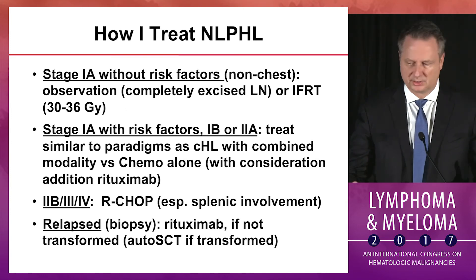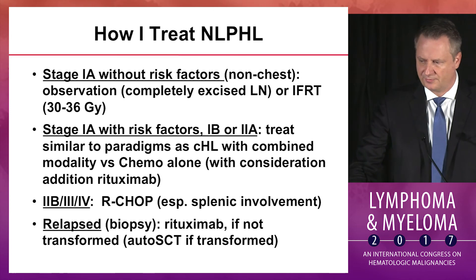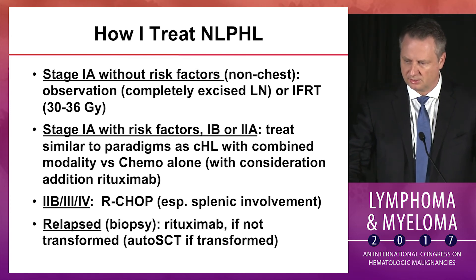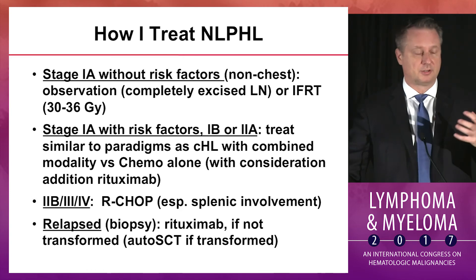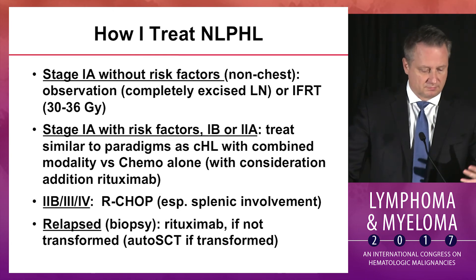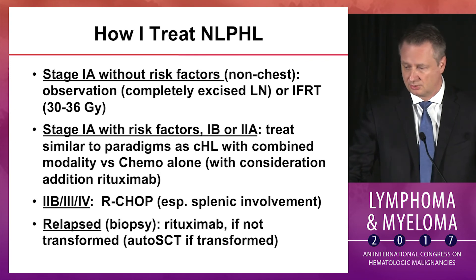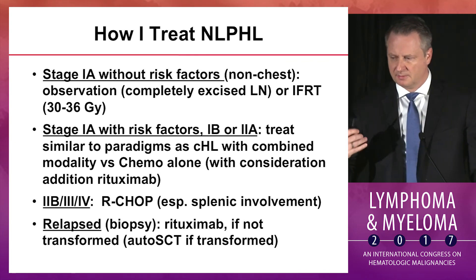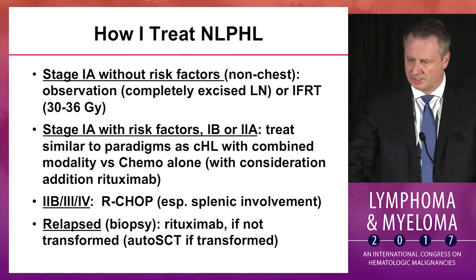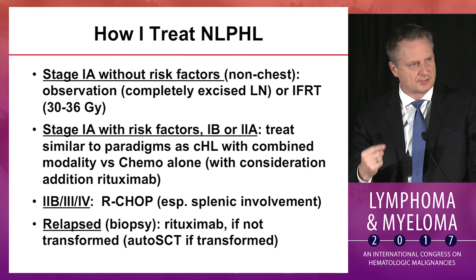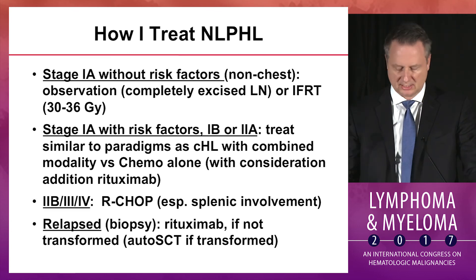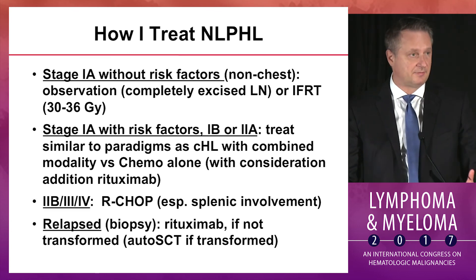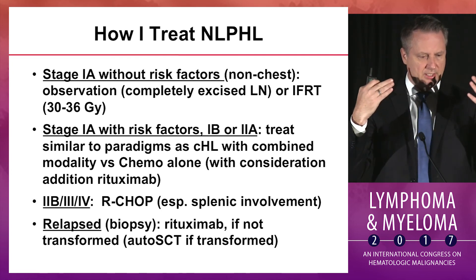In terms of treatment approach: for stage 1A without risk factors and non-central location — particularly neck — consider 30 to 36 Gy involved-field or involved-node radiation. If a node was completely excised with negative margins and the patient doesn't want radiation, observation is reasonable. If there are risk factors like B symptoms or multiple lymph node sites at stage 2, I definitely would not recommend radiation alone, and would treat more like classical Hodgkin's, potentially considering rituximab — whether R-ABVD or R-CHOP.